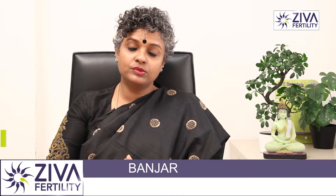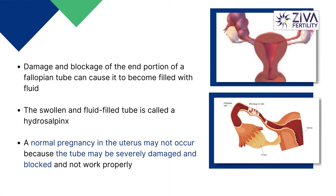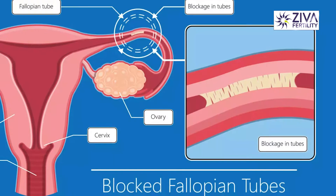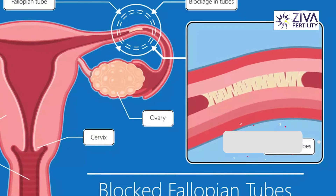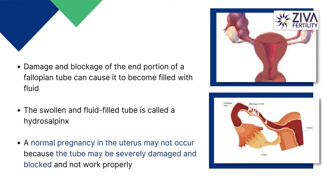The tubes play a very important role in fertilization and therefore pregnancy. Any damage to the tubes can result in infertility. A hydrosalpinx is when any damage or blockage inside the tube causes fluid to fill inside the tube. This hydrosalpinx can block a tube, cause partial damage, or block it partially.